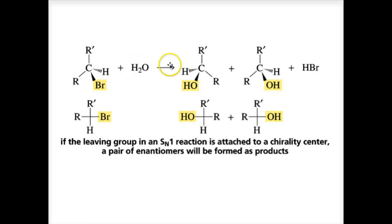This is SN1. Water is going to be our nucleophile. We can have two stereoisomers. As you can see here, plus HBr is formed. The proton goes with the bromine forming HBr and the OH binds to the sp2 carbon. If the leaving group in an SN1 reaction is attached to a chiral center, asymmetric carbon, a pair of enantiomers will be formed as products.